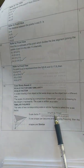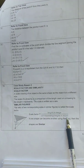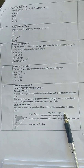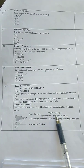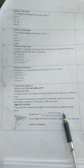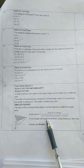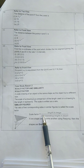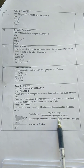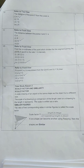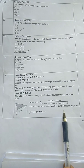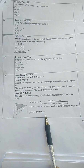The scale factor is the length in the image divided by the corresponding length in the object. For example, if the length of the image is 1 meter and the actual length is 100 meters, the scale factor is 1 divided by 100. If one shape can become another using resizing, then the shapes are similar.